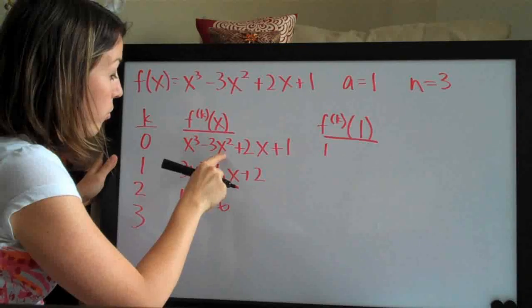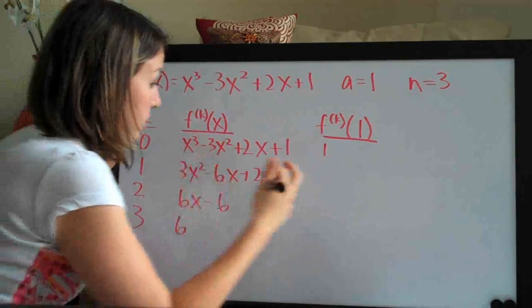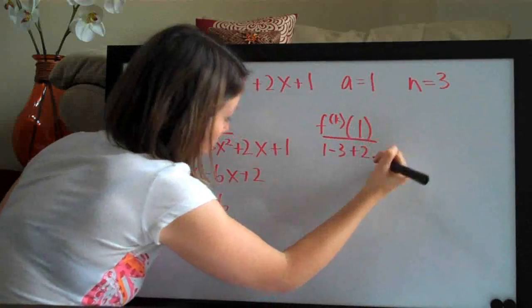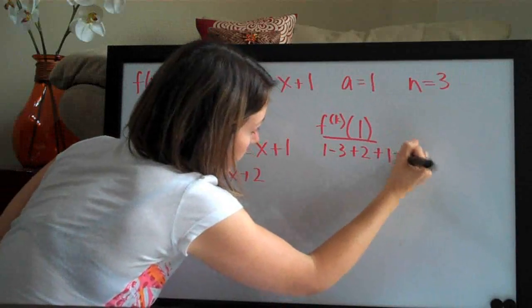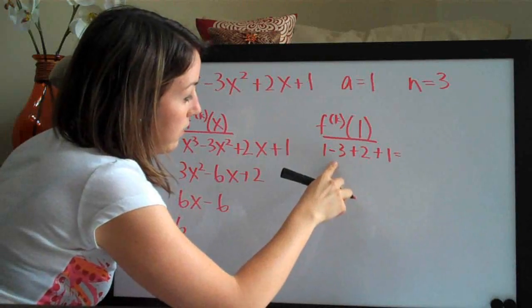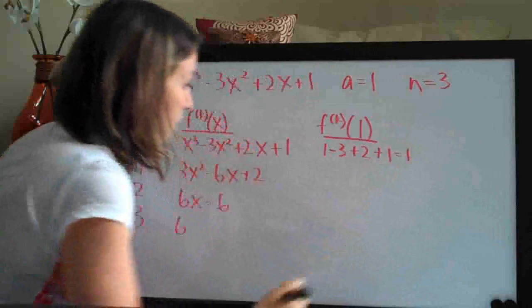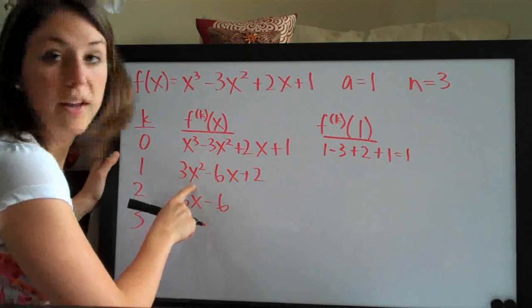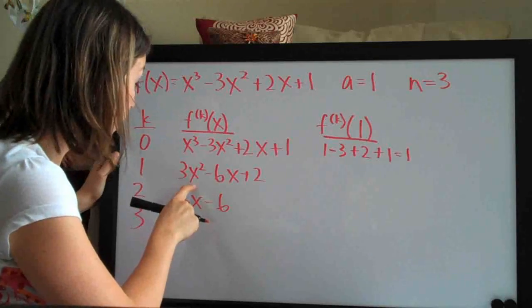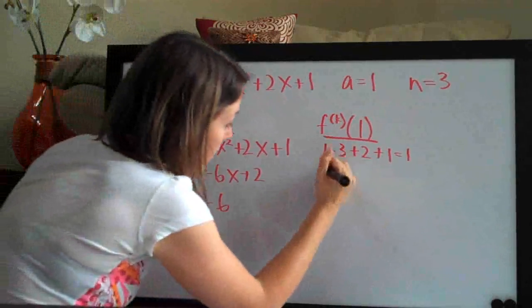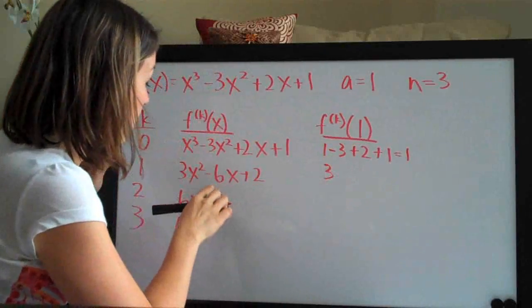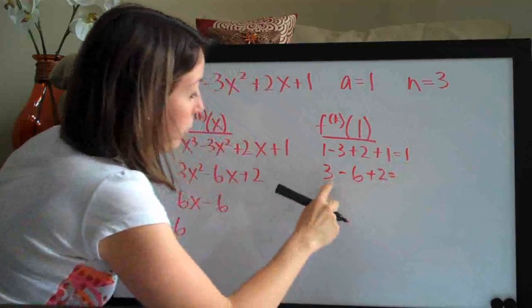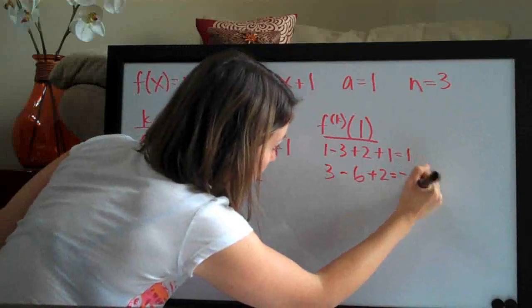1 cubed is 1, 1 squared is 1 times 3 is 3, plus 2 times 1 is 2, plus 1, equals 1 minus 3 is negative 2, plus 2 is 0, plus 1 is 1. So then we plug 1 into the second row here. 1 squared is 1 times 3 is 3 minus 6 plus 2 equals negative 1.